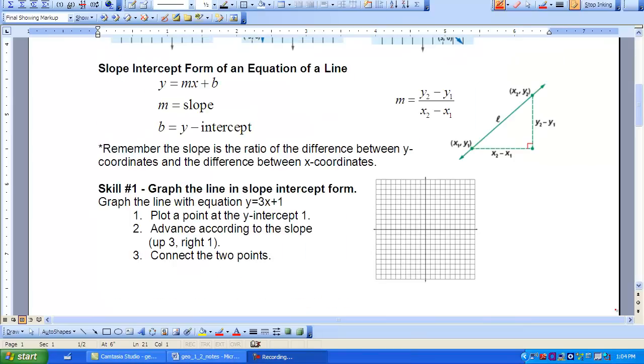Equations for lines also can take on another form. They can take on the slope-intercept form. We studied that last year in algebra. And as you remember, the equation or the form of that equation is Y equals MX plus B. Remember, the M stands for the slope and the B stands for the Y-intercept.